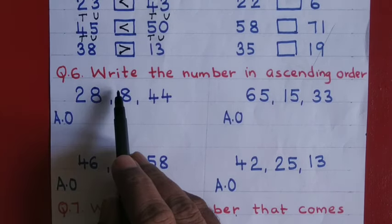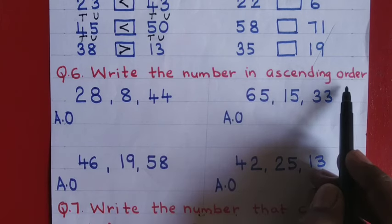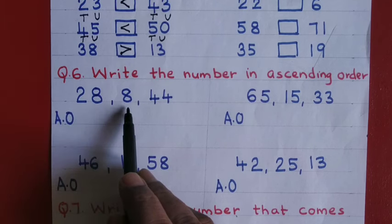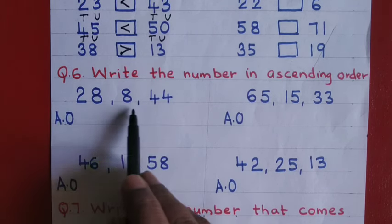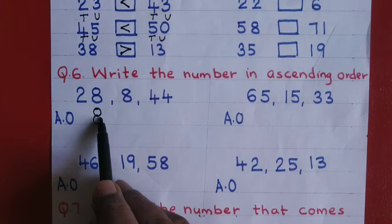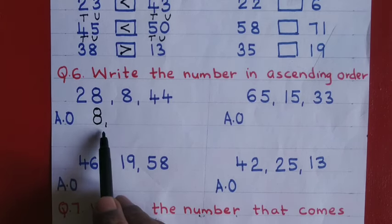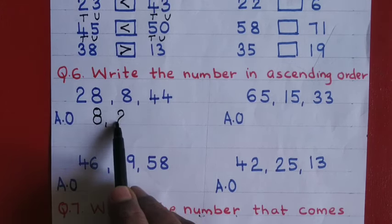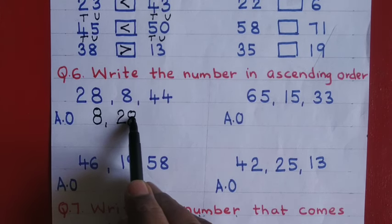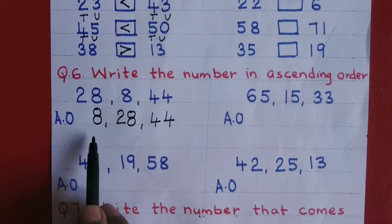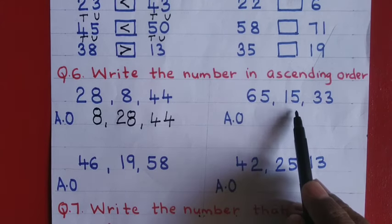Question number six: write the numbers in ascending order. Ascending order means arranging the given numbers from smallest to biggest. For twenty eight, eight, and forty four: eight is a one-digit number so it is smaller than the two-digit numbers. Write eight first, put a comma, then compare twenty eight and forty four. Twenty eight is smaller, so write twenty eight next, and finally forty four.